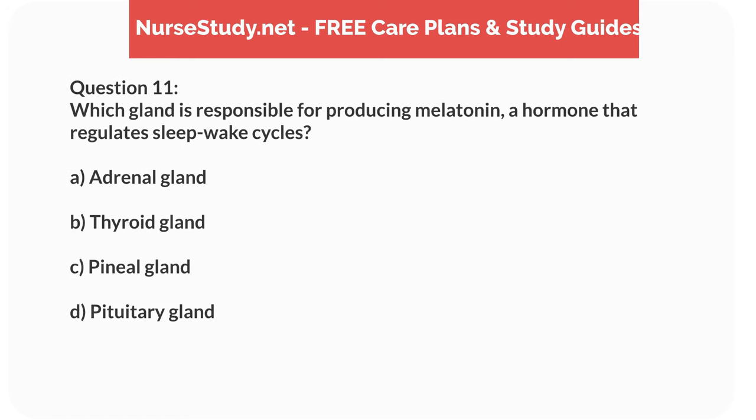Question 11. Which gland is responsible for producing melatonin, a hormone that regulates sleep-wake cycles? A. Adrenal gland. B. Thyroid gland. C. Pineal gland. D. Pituitary gland.